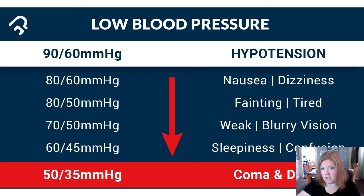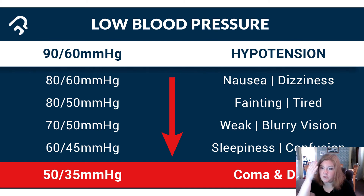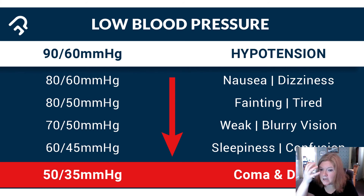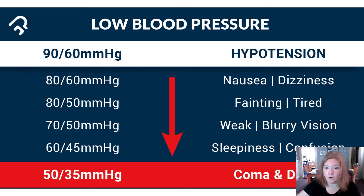Hypotension, on the other hand, is low blood pressure. Symptoms include nausea, dizziness, fainting, and fatigue. Your vision may be weak and blurry because not enough blood is flowing to your eyes. You may feel sleepy or confused, and in the worst case, it can lead to coma and death.